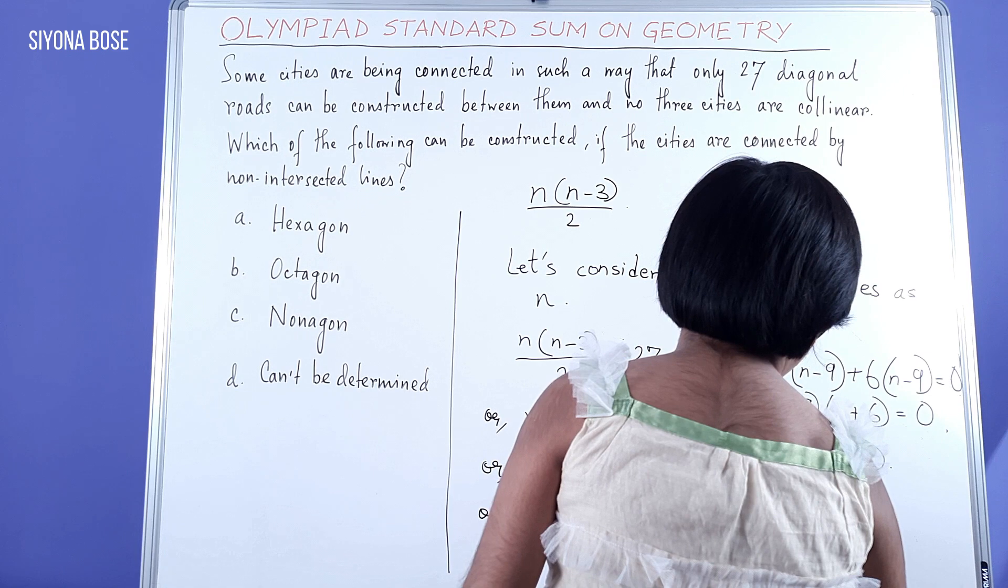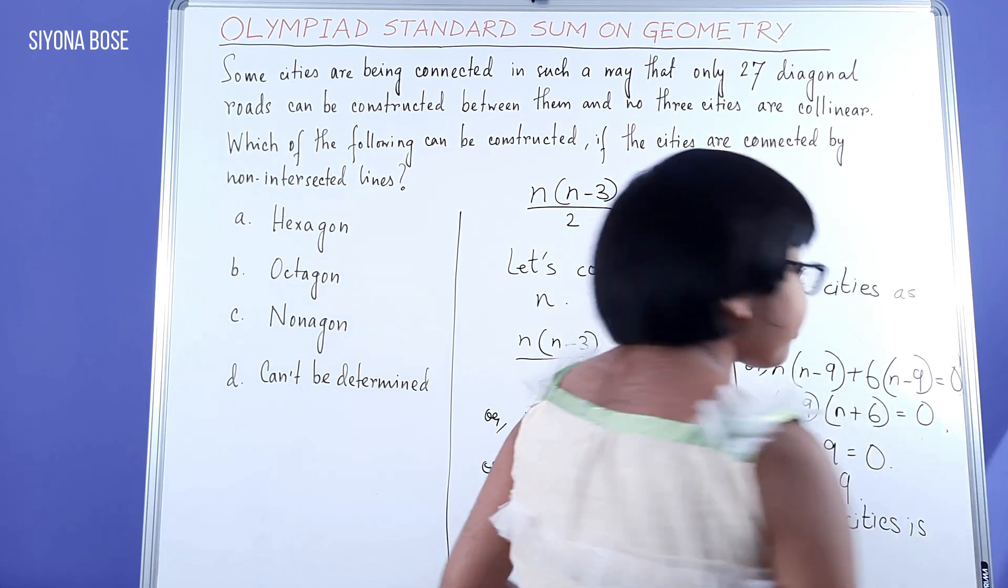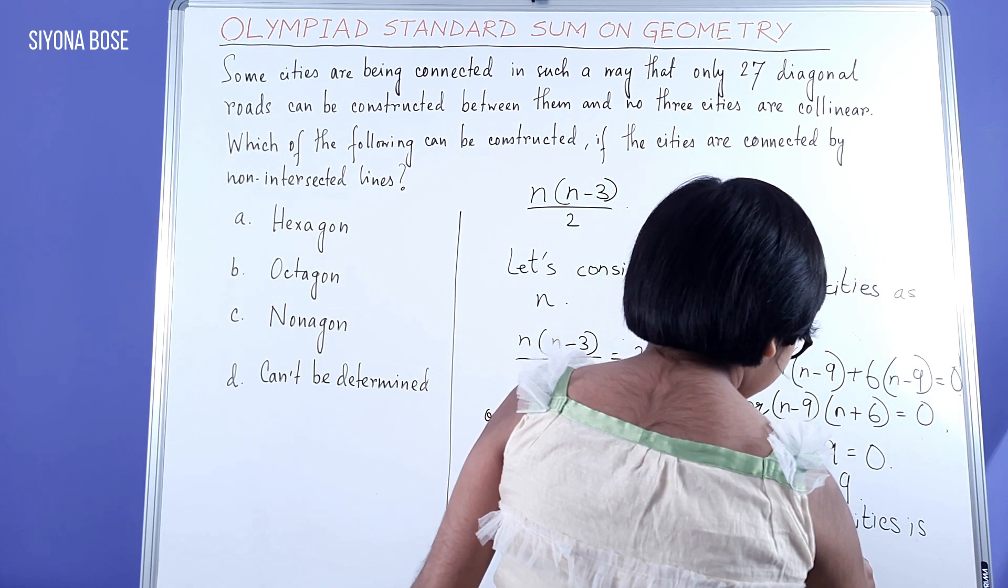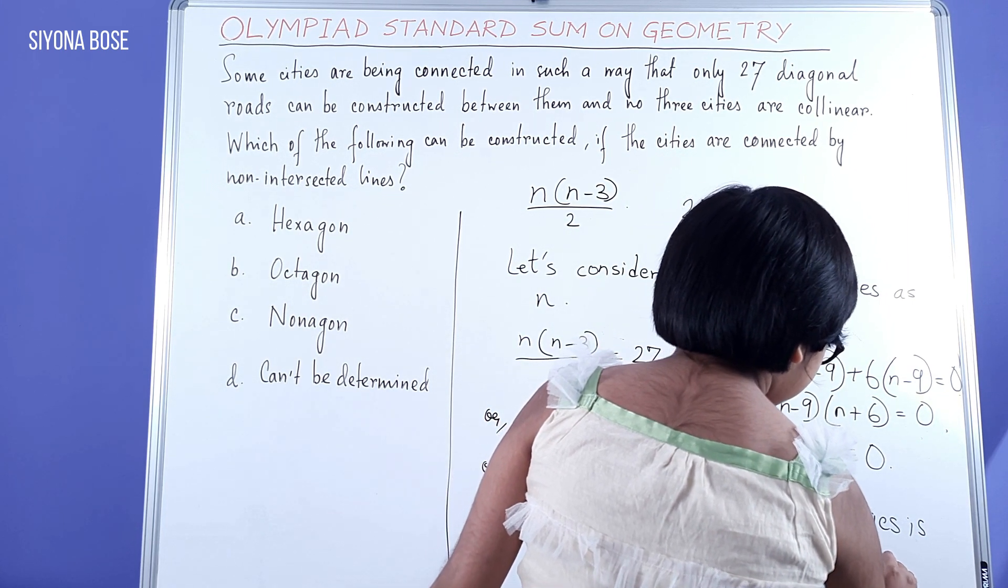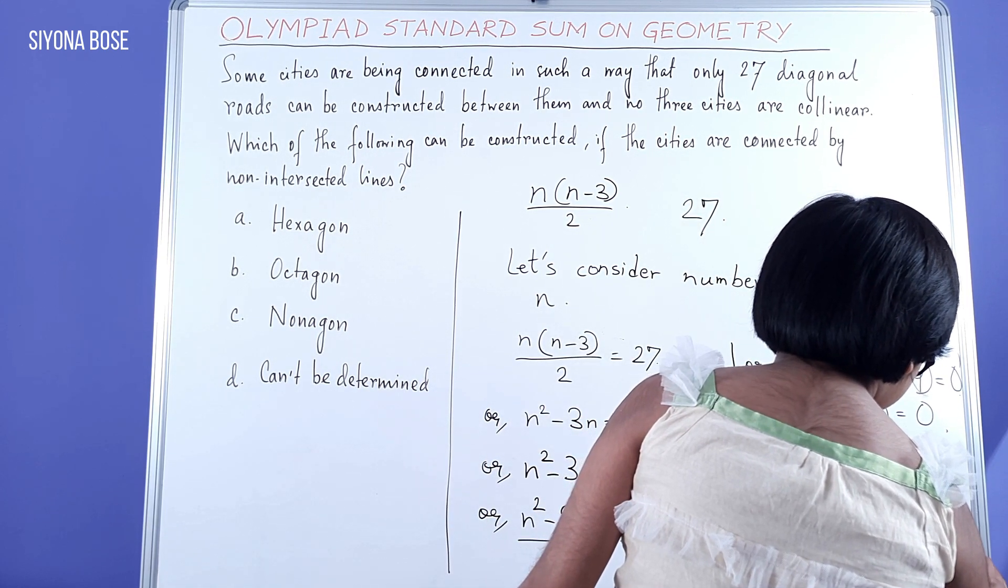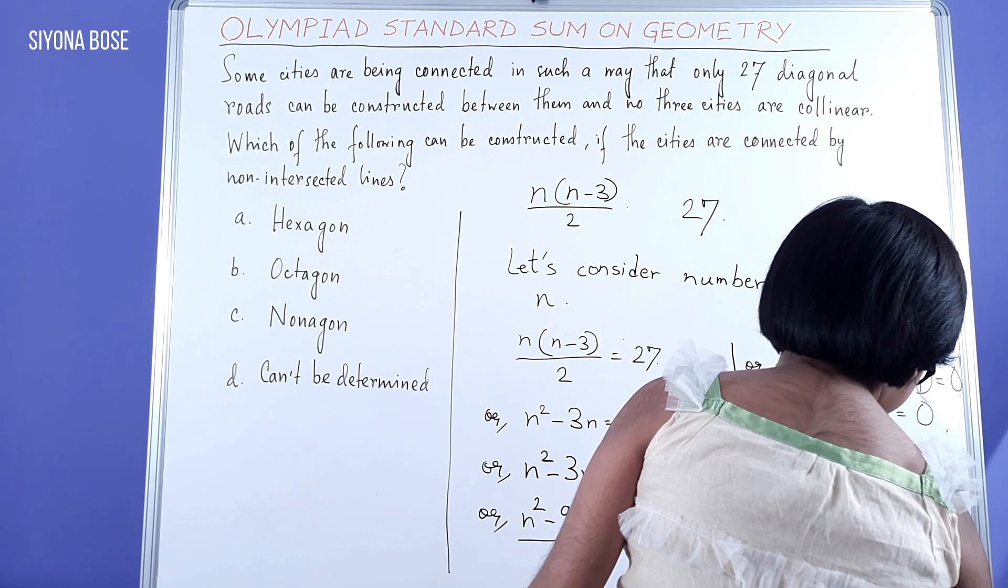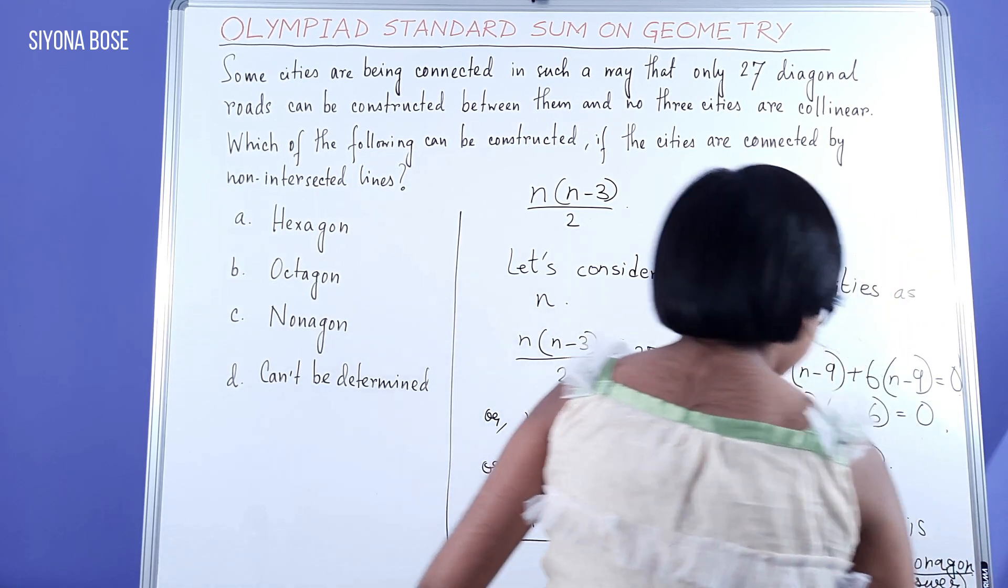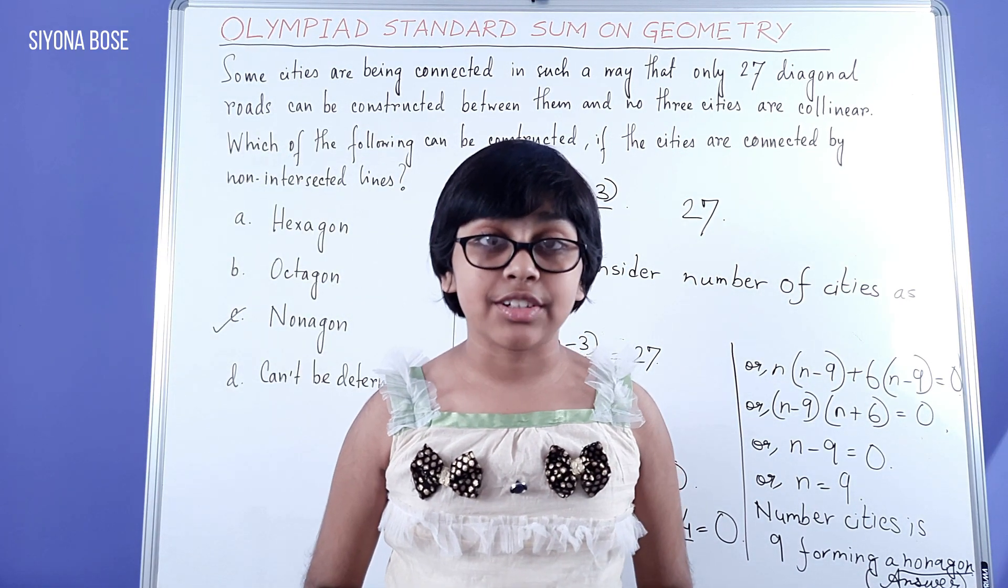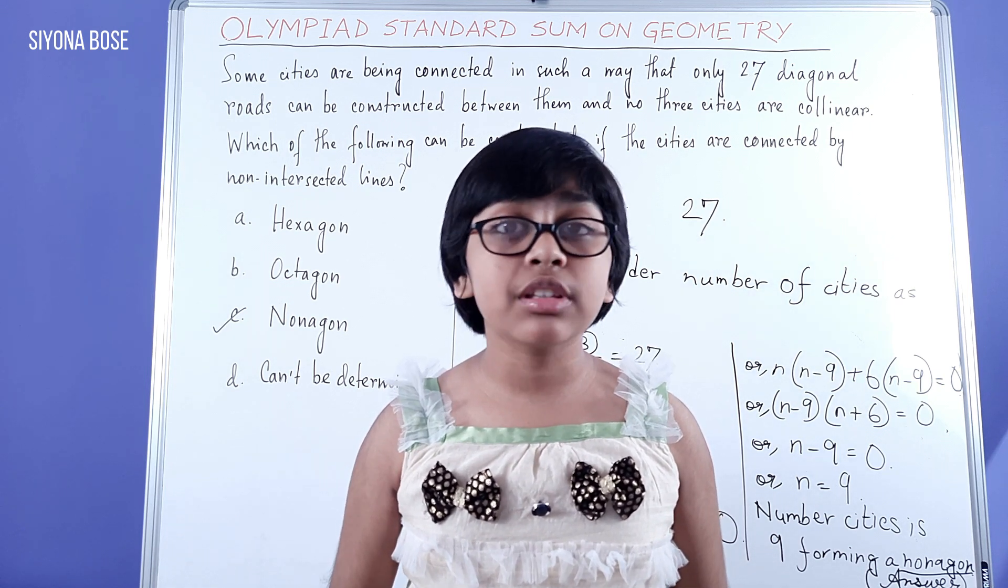Number of cities is 9, forming a 9-sided polygon that is a nonagon. And this is our final answer. Option C is the correct answer. So I'm giving you a few moments to look at the board and see how the sum was solved, so that can totally clear your concept.